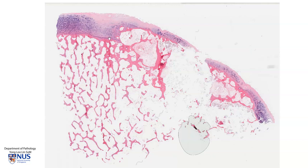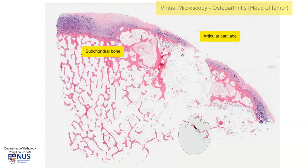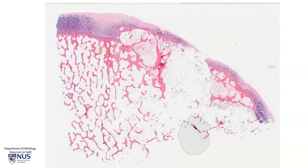This is a virtual microscopy slide of the articular surface of the head of the femur. I am outlining here the articular cartilage, which is quite abnormal. And then here we have the subchondral bone, which is the bone just deep to the articular cartilage. In this region, we see fairly normal appearing cancellous or spongy bone, and there is some fatty marrow in between the bony trabeculae.